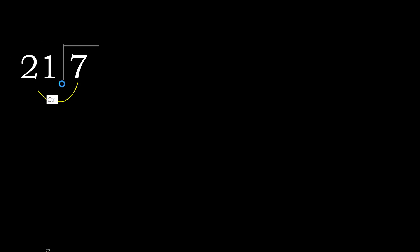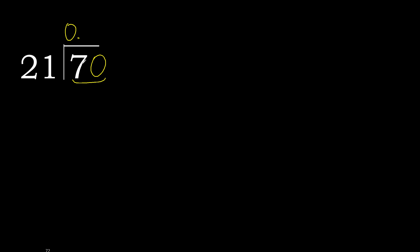7 divided by 21. 7 is less, therefore complete — always complete with 0. Here, 0 point. 70 is not less, therefore work with 70.